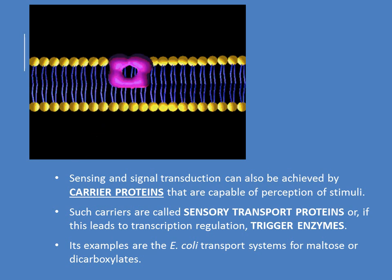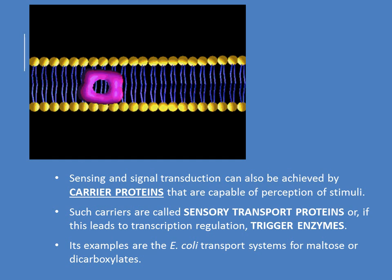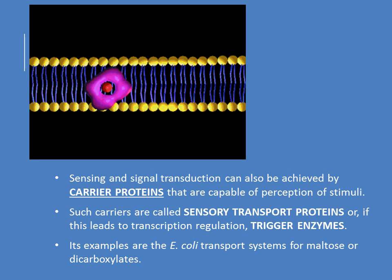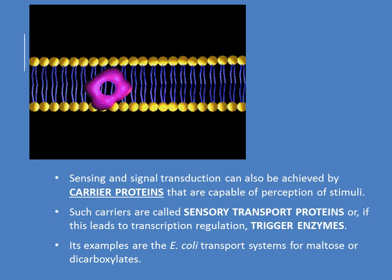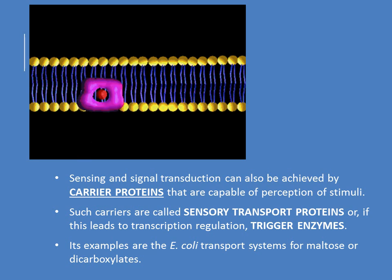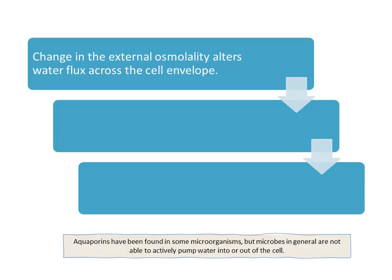Alternatively, carrier proteins can also act in the process of sensing the signal. The signal in this case is in the form of ions, metabolites, or solutes, which are perceived by carrier proteins, captured, and transmitted inside the cell. If they perform this function in addition to their normal transport function, they are termed sensory transport proteins; if they move inside and regulate transcription, they are called trigger enzymes. An example is carrier proteins involved in transport of maltose or dicarboxylates in E. coli.